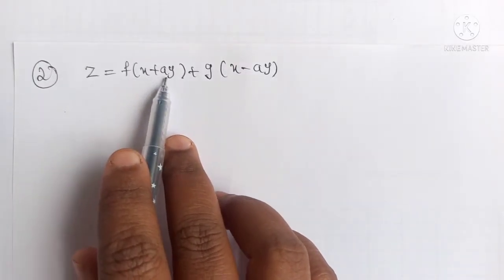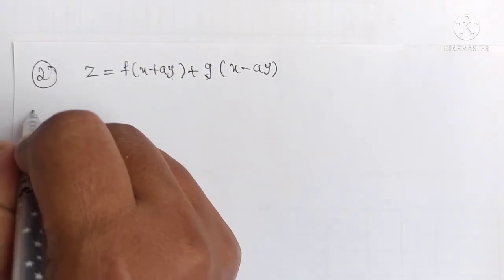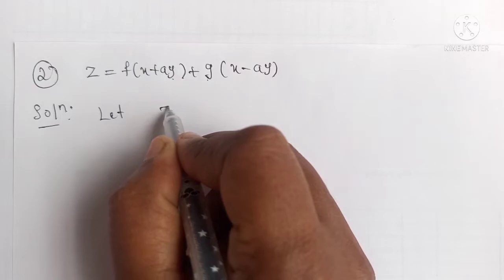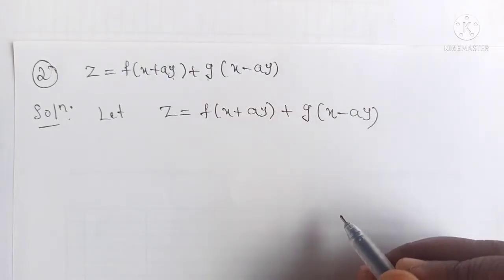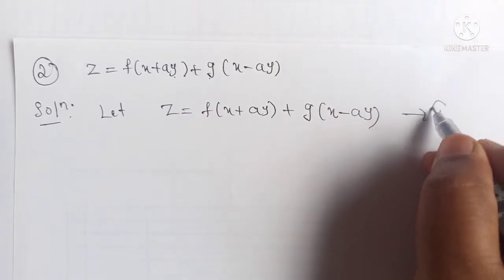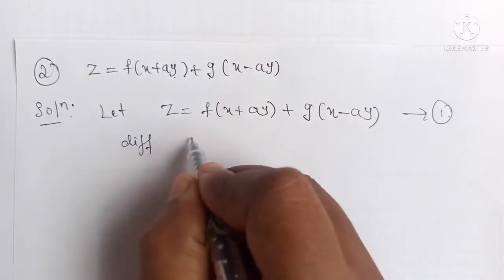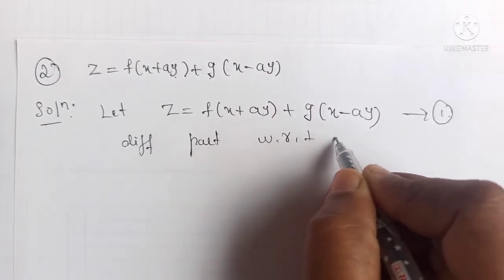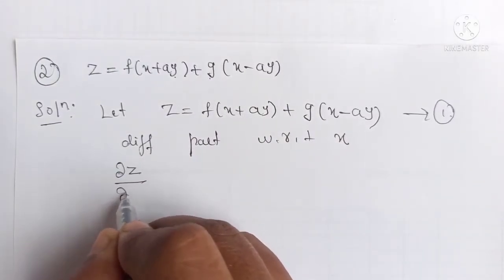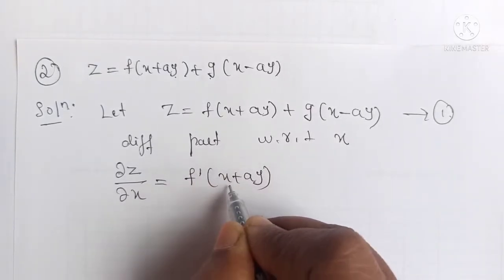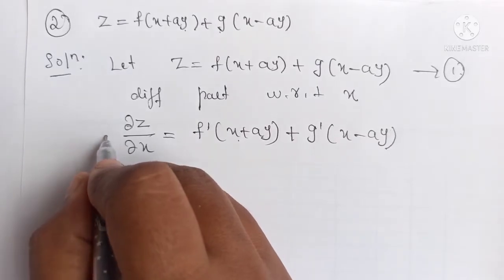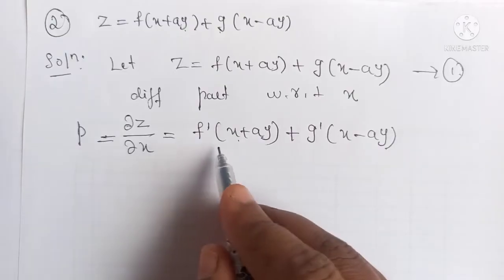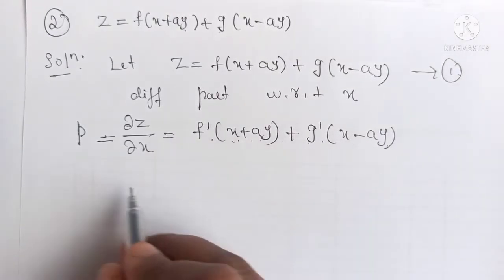Second example: z equals f of (x + ay) plus g of (x − ay). Consider the given equation as equation 1. Here we have two functions f and g, so when we have two functions we must differentiate two times — that is, we find partial derivatives of second order. Differentiating equation 1 partially with respect to x gives dou z by dou x equals f dash of (x + ay) into 1 plus g dash of (x − ay), represented by p.